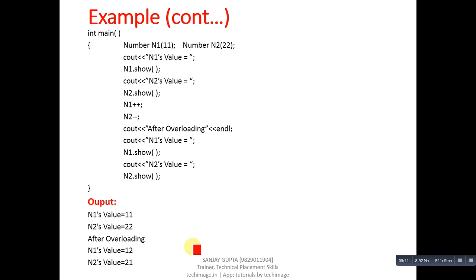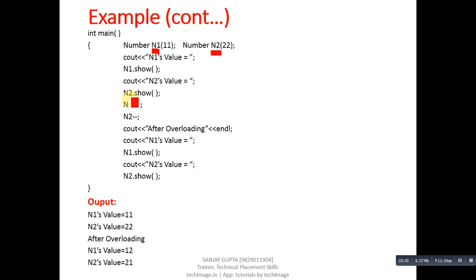In the main function, two objects n1 and n2 are created: n1 receives 11 and n2 receives 22. n1.show() prints 11 and n2.show() prints 22, so you can see 11 and 22 in the output.